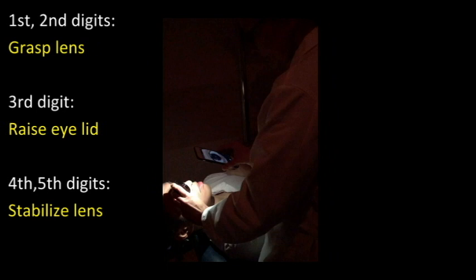The first and second digits can be used to grasp the lens. The third digit can be used to raise the patient's eyelid. The fourth and fifth digits can be used to stabilize the lens against the patient's forehead. You can do whatever way you're most comfortable with.